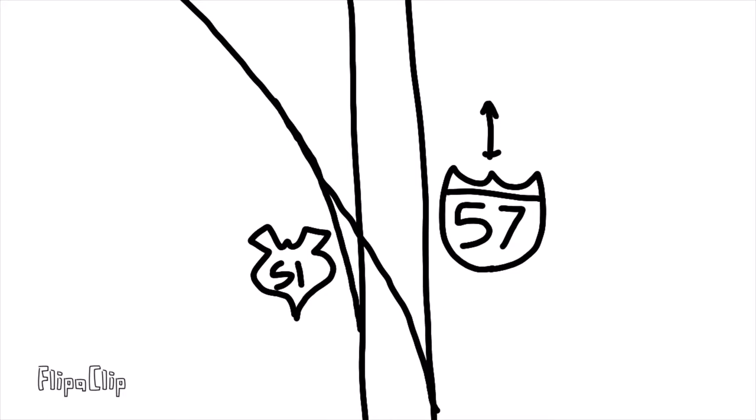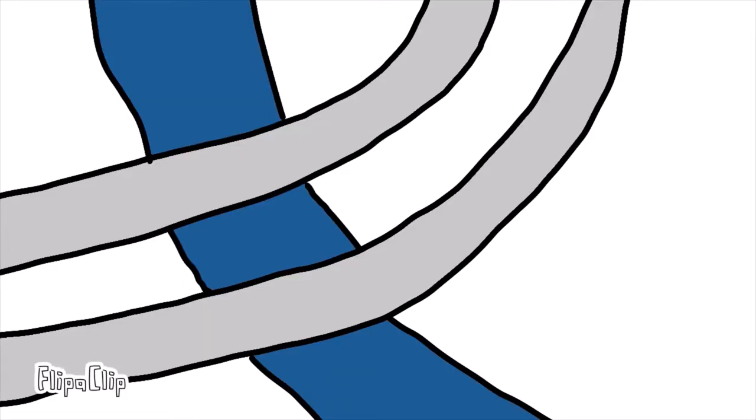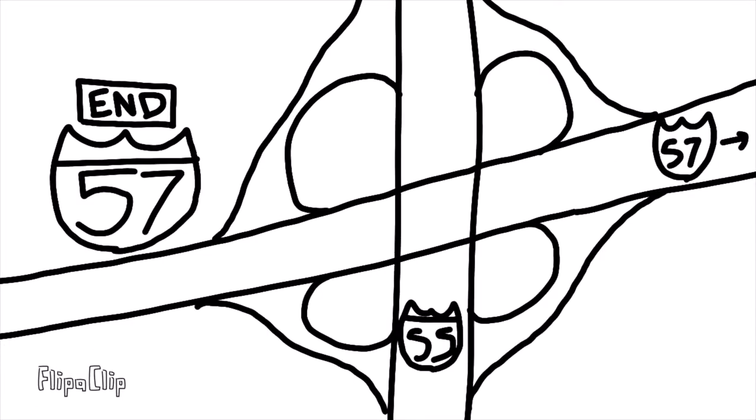57 goes south, where it has an exit with U.S. Route 51, and the two are concurrent until Cairo, which is also the last Illinois exit. 57 crosses the Mississippi River, where it crosses into Missouri. From there, it has an exit with U.S. Route 62 in Charleston. Finally, I-57 comes to a close in Sykeston, Missouri, where it exits with I-55 and continues westward as U.S. Route 60.